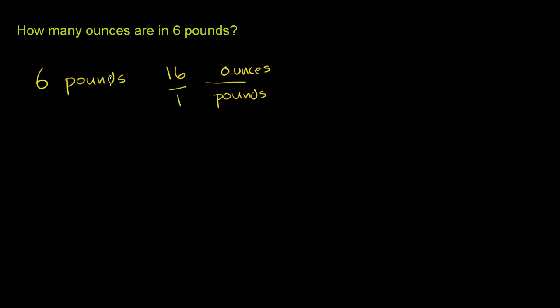So if we multiply these two expressions, this pounds will cancel with that pounds, and we'll just be left with the unit of ounces, which is what we want, and we just multiply 6 times 16.